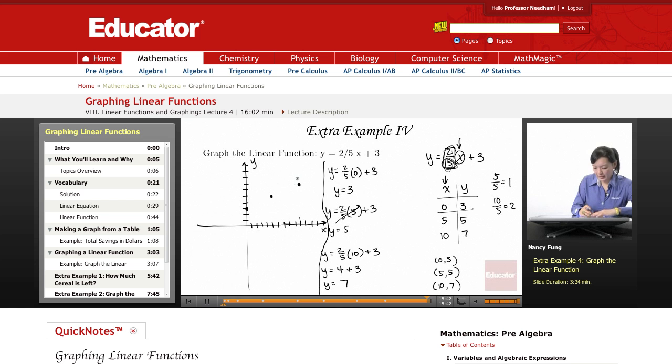So they're pretty much all in a line here. And then it's good to use a ruler to connect them. And there's your linear function. And you can go ahead and label it, y equals 2 fifths x plus 3. Thank you for watching Educator.com.